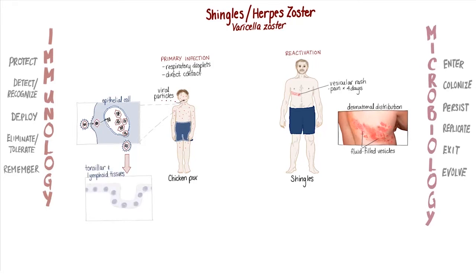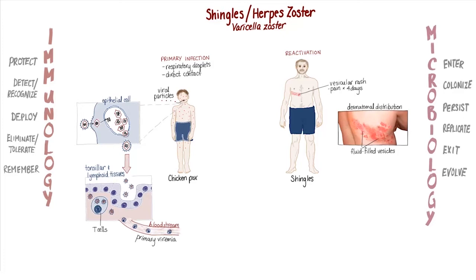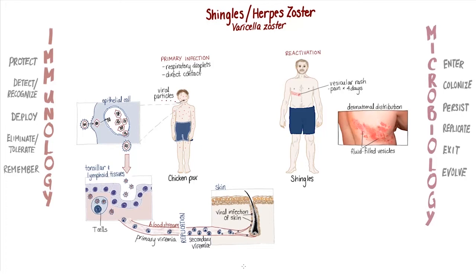In the lymphoid tissues, varicella zoster displays viral tropism for host T cells, an ability to infect these cells. When T cells then enter the bloodstream, the virus is transmitted throughout the body during the primary viremia. After a second round of replication, larger amounts of the virus are again released into the bloodstream during the secondary viremia, and this is when the virus invades the skin, resulting in small itchy vesicles on the face and body of the infected child.